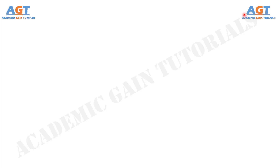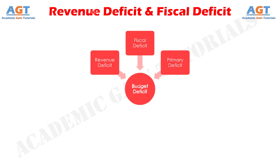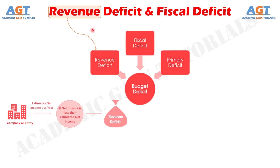Welcome to Academic Gain Tutorials. In this video, we will look into the differences between revenue deficit and fiscal deficit. Revenue deficit indicates indebtedness in the present budget owing to total revenue receipts and expenses proposed in the budget. It is a situation when the revenue expenditure is in excess of the revenue receipt.